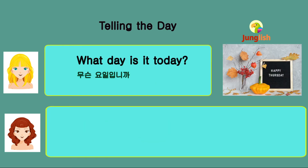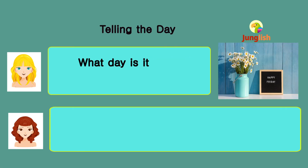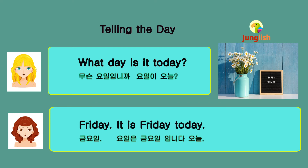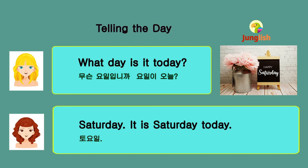What day is it today? Thursday. It is Thursday today. Thursday. It is Thursday today. What day is it today? Friday. It is Friday today. Friday. It is Friday today. What day is it today? Saturday. It is Saturday today. Saturday. It is Saturday today.